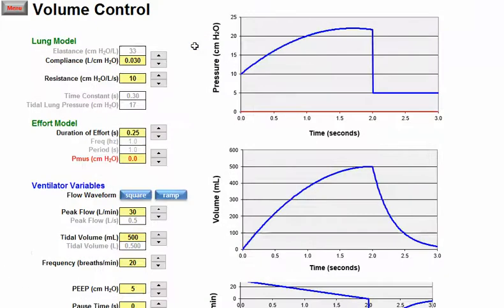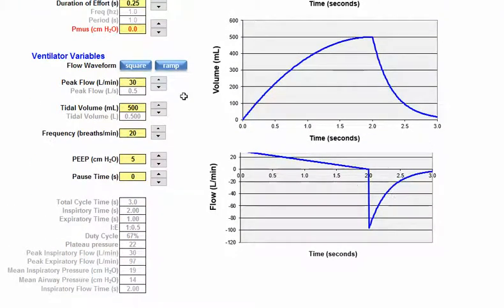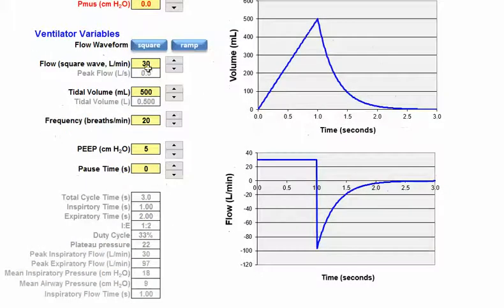So I'm going to switch this to a ramp or decelerating flow. I'm going to scroll down to my page and you notice I have a decelerating flow now and my peak flow is 30. That's where I was before. However, you notice my inspiratory time is two seconds.